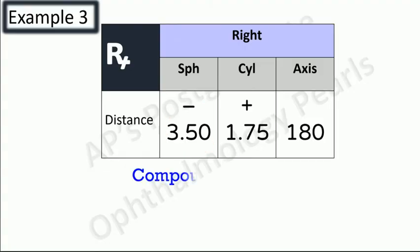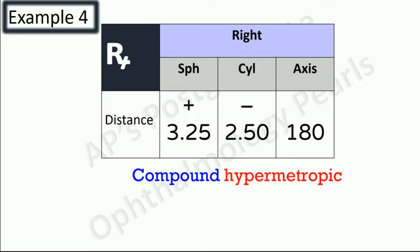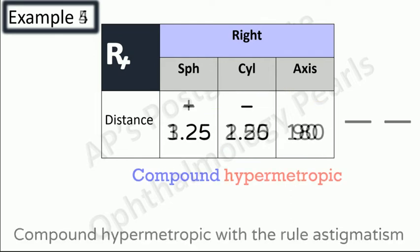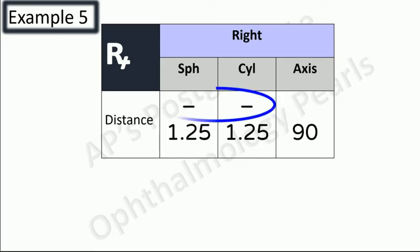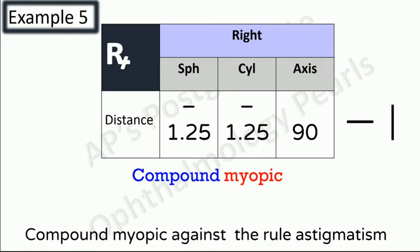Example three: signs are different, sphere is greater so compound; sign of sphere is minus so myopic; lines are in different directions so against-the-rule — this is compound myopic against-the-rule astigmatism. Example four: signs are different, sphere is greater so compound; sign of sphere is plus so hypermetropic; both lines in same direction so with-the-rule — compound hypermetropic with-the-rule astigmatism. Example five: signs are the same so compound; sign is minus so myopic; lines in different directions so against-the-rule — compound myopic against-the-rule astigmatism.